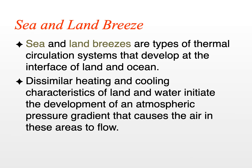Let's look at sea and land breeze. This is a type of thermal circulation system that develops because of different heating and cooling characteristics of land and ocean or lake surfaces. Land tends to heat up faster than water during the day and tends to cool faster at night. Water warms slower during the day, retains heat during the night, and stays warmer relative to land. These dissimilar heating and cooling characteristics initiate a pressure gradient that causes air in these areas to flow.